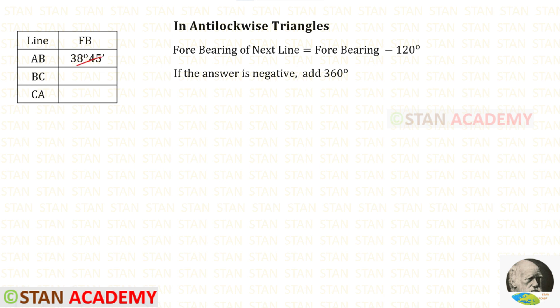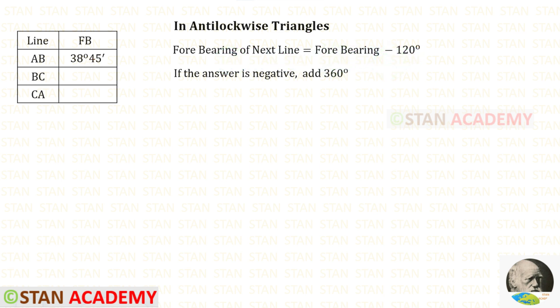Using this forebearing, we can find the forebearing of BC. In the anti-clockwise triangle traverse, the formula to find the forebearing of the next line is: forebearing minus 120 degrees. If the answer is negative, then we have to add 360 degrees to the answer.